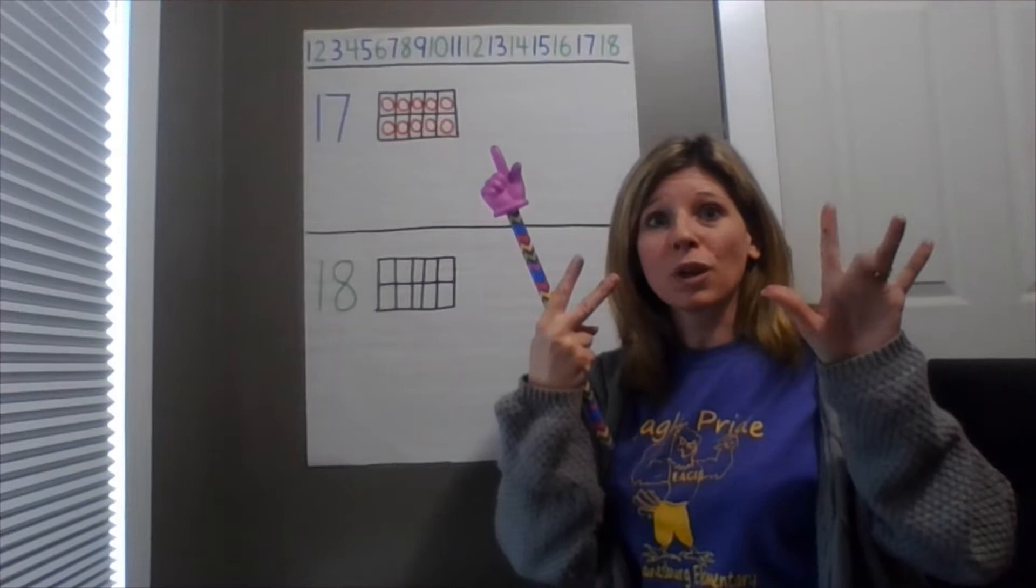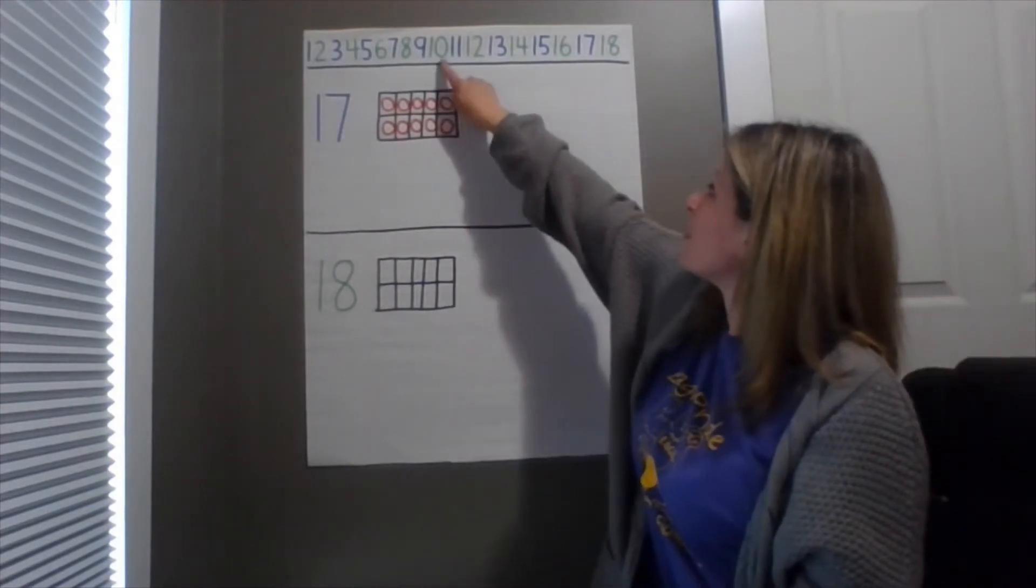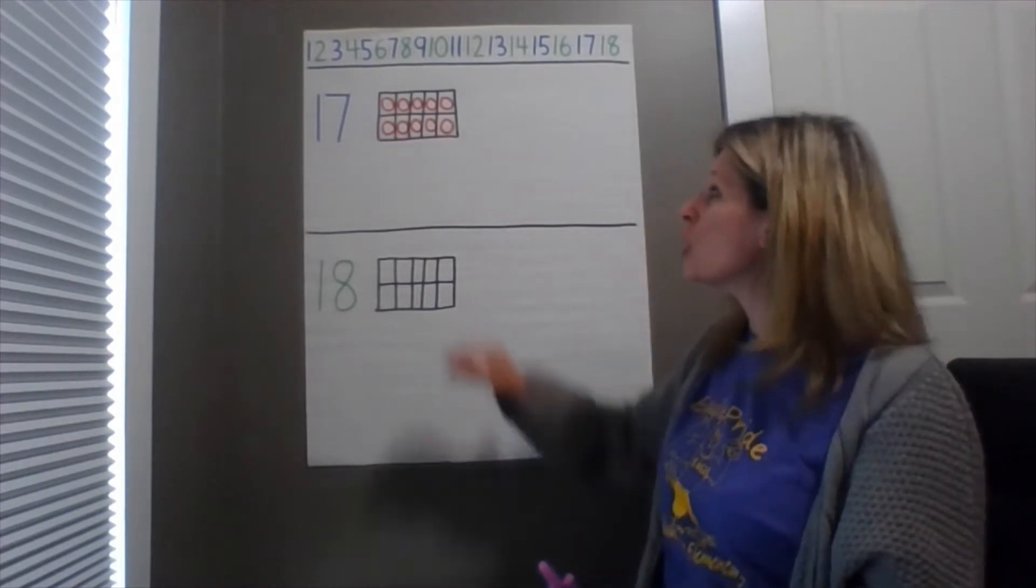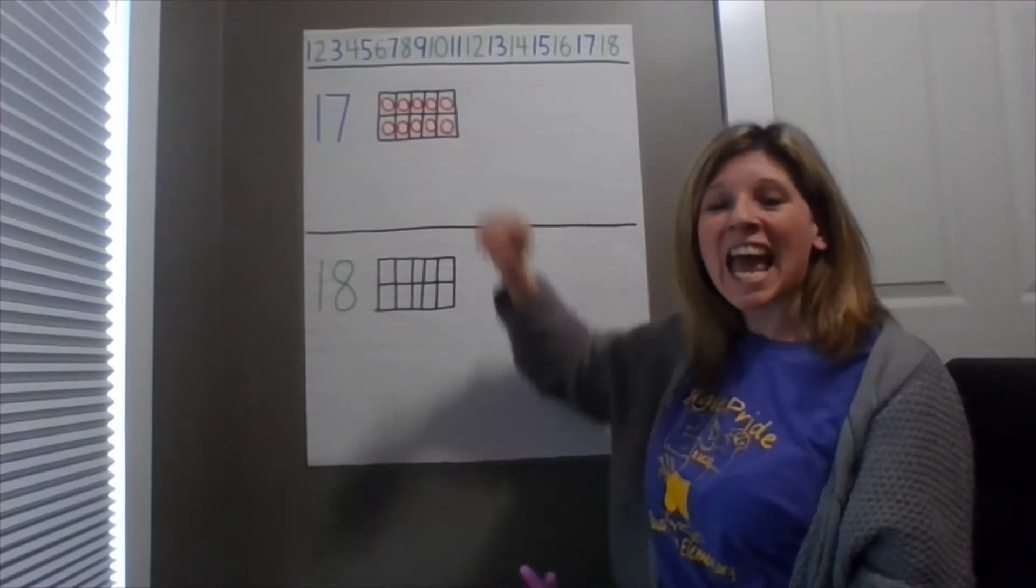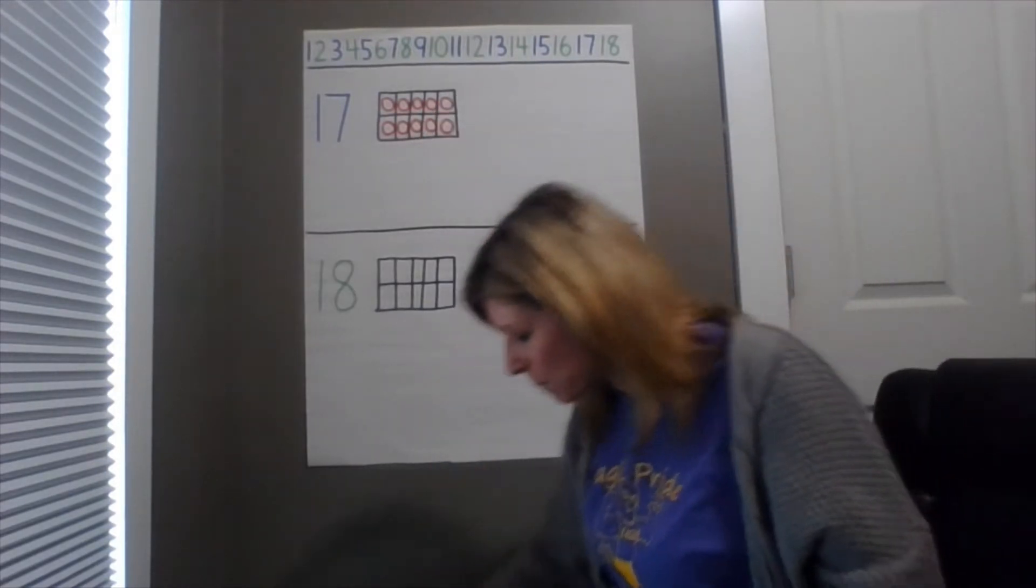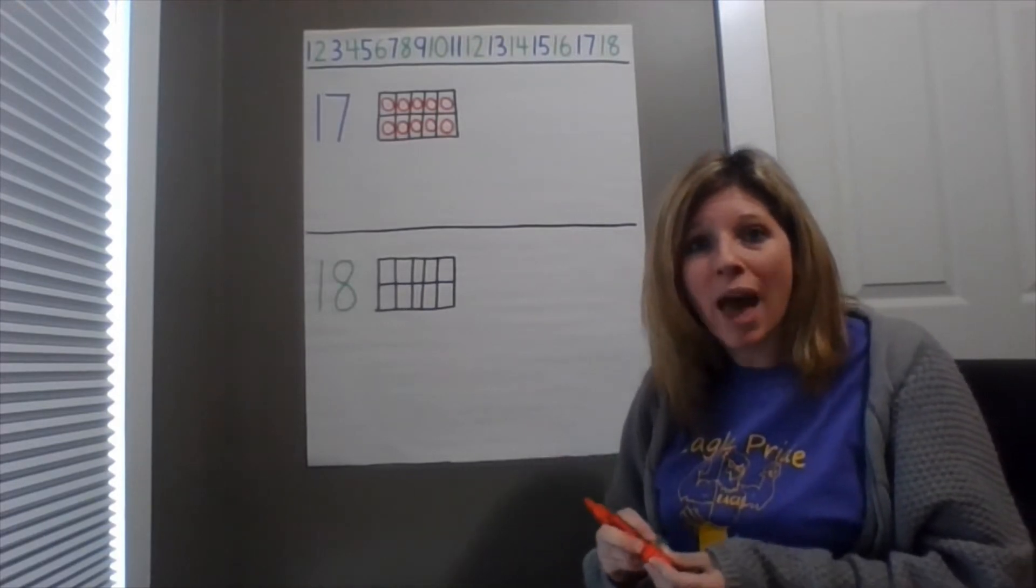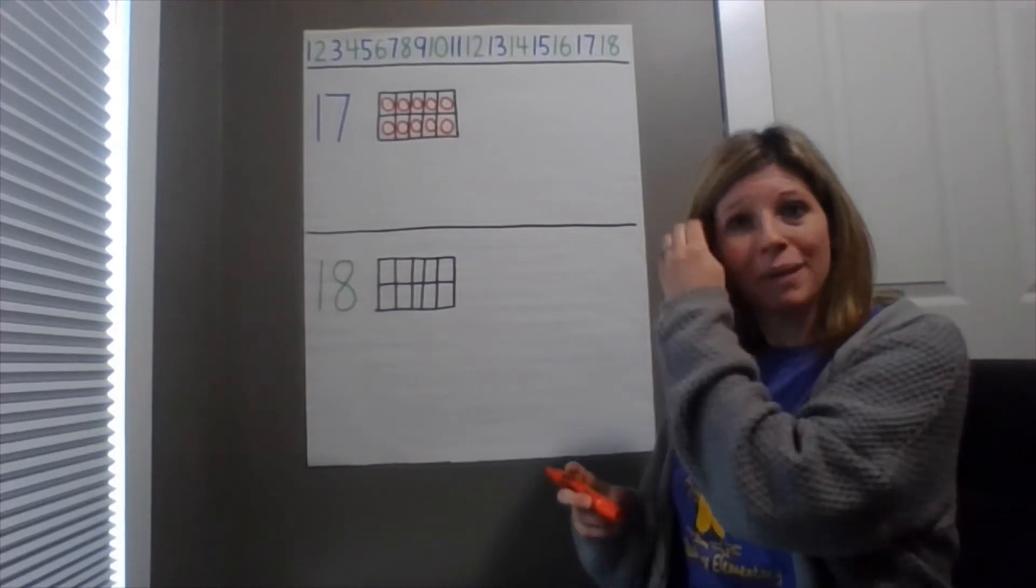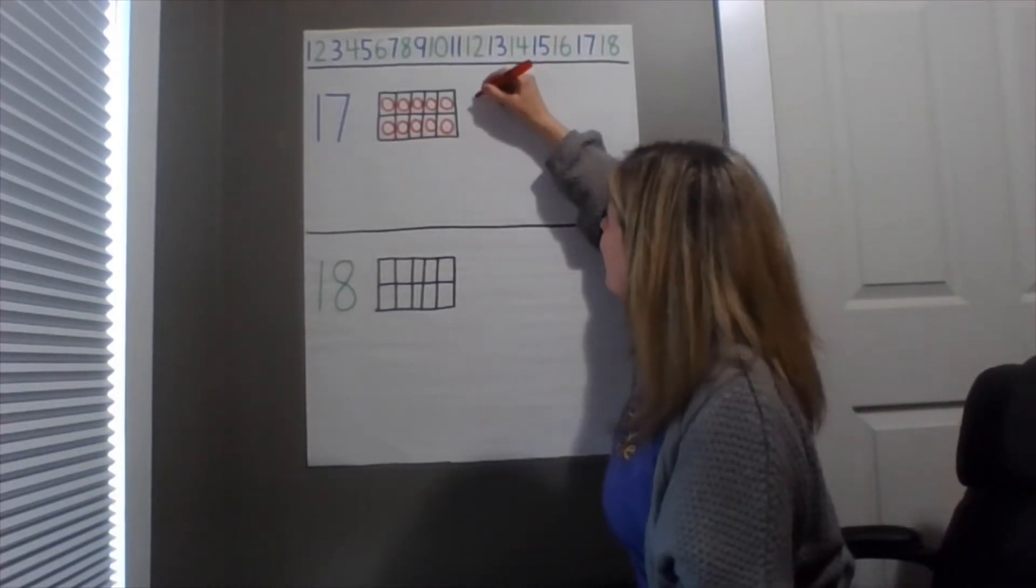So I added 1, 2, 3, 4, 5, 6, 7. So I went from 10 to 17. I jumped ahead 7. So I know that 17 is a group of 10 and 7 more. So I'm gonna draw 7 more counters. As I do that, I want you to take your objects that you are using as counters and put them next to your 10 frame. Here we go. So I'm gonna add 7.